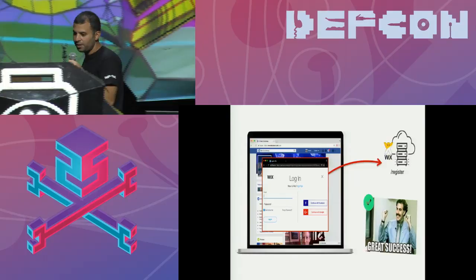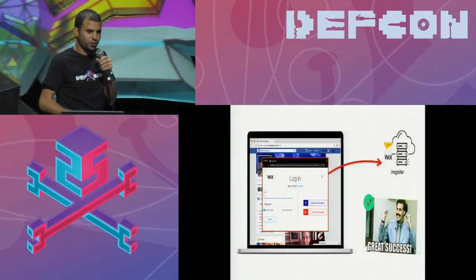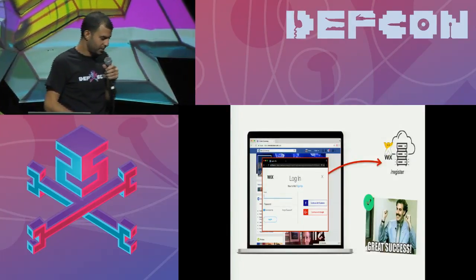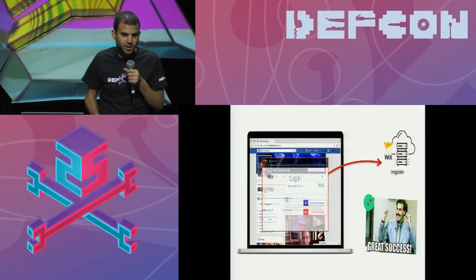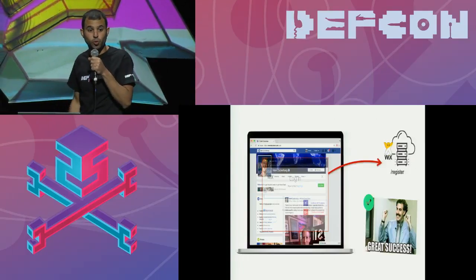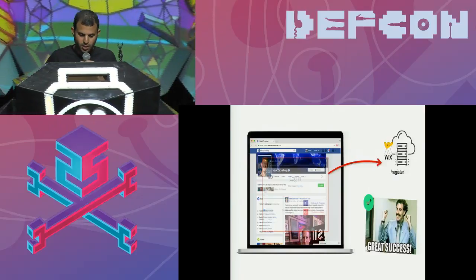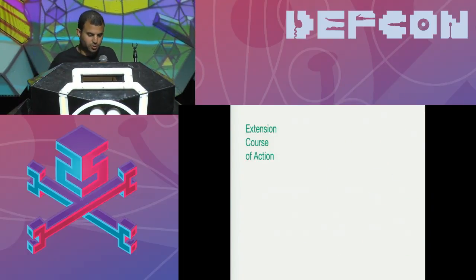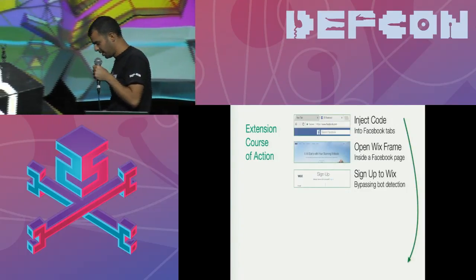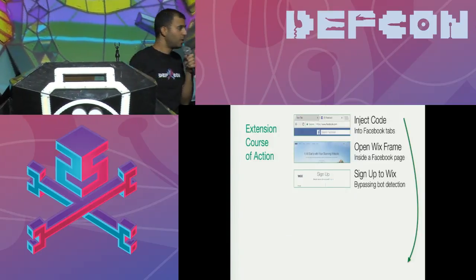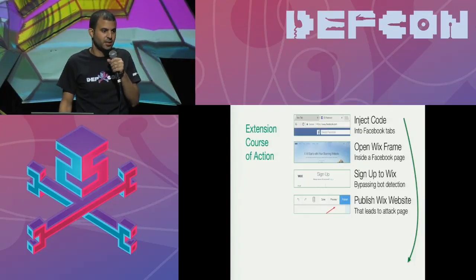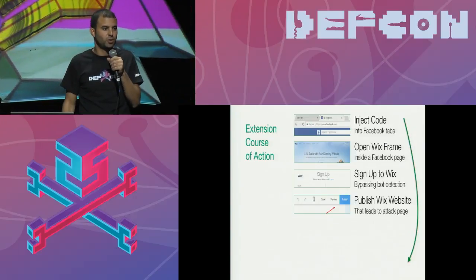The attackers opened the frame to bypass our bot protection mechanisms because if you open a frame with the signup form inside Facebook and send the signup request from within that frame, it succeeds. This frame is transparent and the victim user does not notice anything. Going back to the extension's course of action: it injects code into the Facebook tab, signs up to Wix, and after the account is created publishes a new Wix website. All these websites lead to the same attack page we saw earlier.